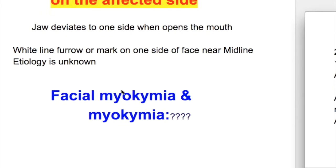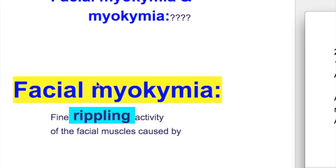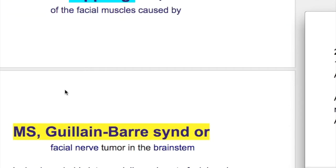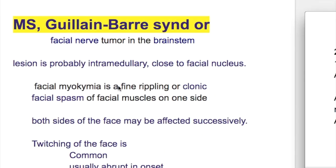The etiology is unknown. The next topic is facial myochemia. In facial myochemia, there are fine rippling activities of the facial muscles. The cause of the condition is multiple sclerosis, Guillain-Barre syndrome, and facial nerve tumors in the brain stem. The lesion is probably intramedullary, close to the facial nucleus.